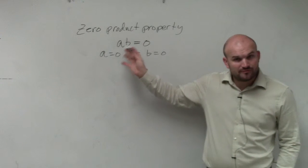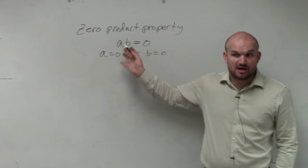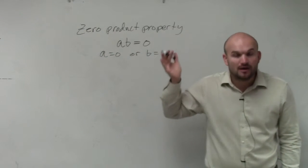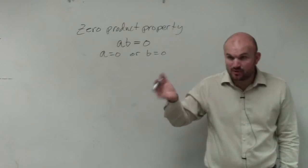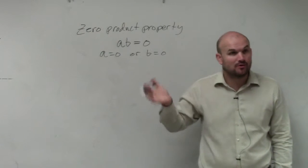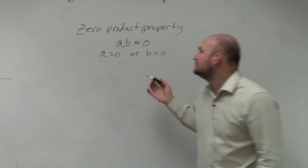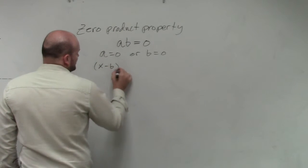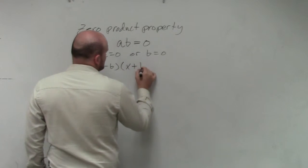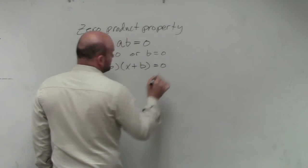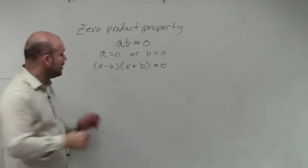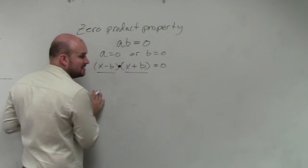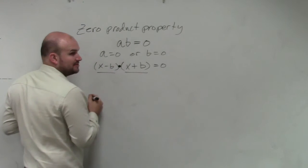Do you guys agree that if these two numbers, whatever these numbers are, have a product equal to zero, then at least one of them has to be zero? Or they could both be zero. In the same respect, if I had an expression times another expression equal to zero, then one of those expressions has to be equal to zero, since it's the product of those two expressions.